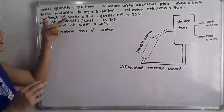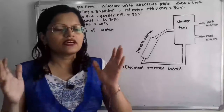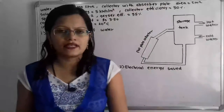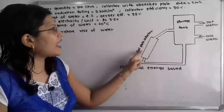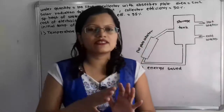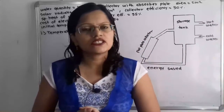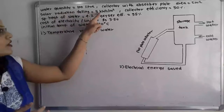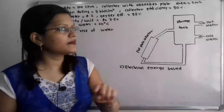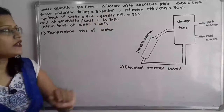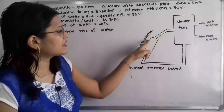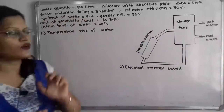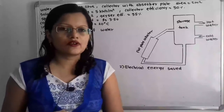Now let us understand the given data and what factors we have to find out. The water quantity is 100 litres. The collector has an absorber plate area of 2 meter square — that is the area for which solar radiations are absorbed. The solar radiation falling is 5 kilowatt hour for 1 meter square. Collector efficiency is 50%. Specific heat of water is 4.2 kilojoule per kilogram degree Celsius.